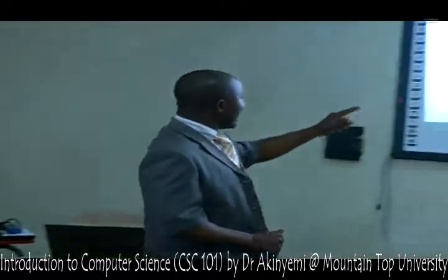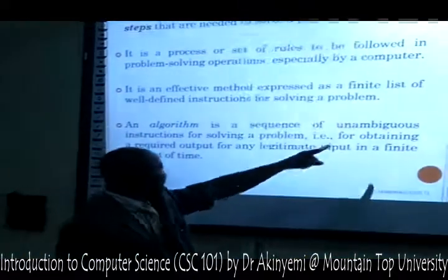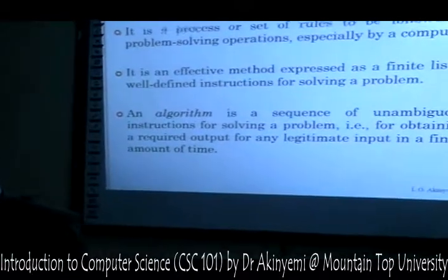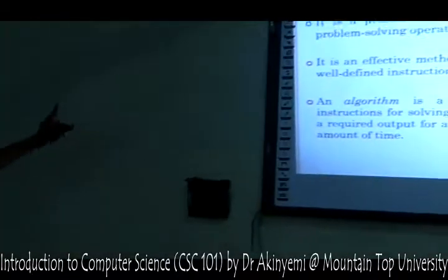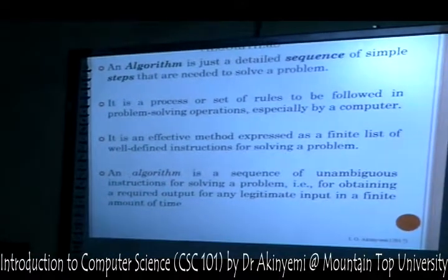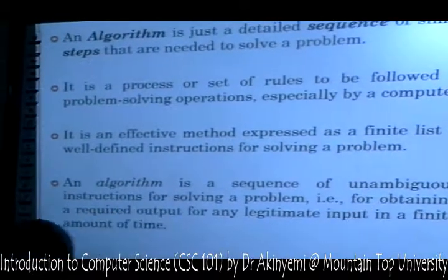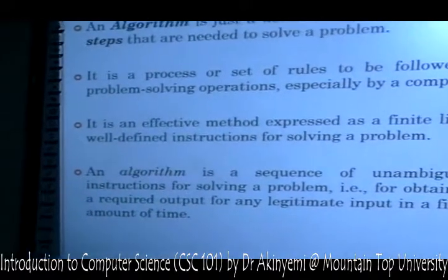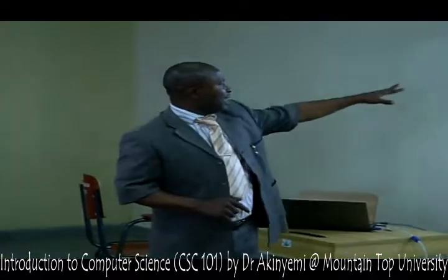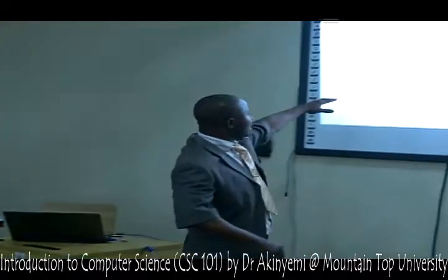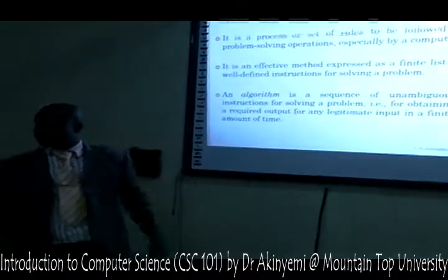The fourth definition says that an algorithm is a sequence of unambiguous instructions. That is, the instructions are going to be clear, not having two or more different meanings — they should be well-defined. So when you have all of these definitions, they all point to the same thing: following a sequence of steps to solve your problem. And that is the definition of algorithm.